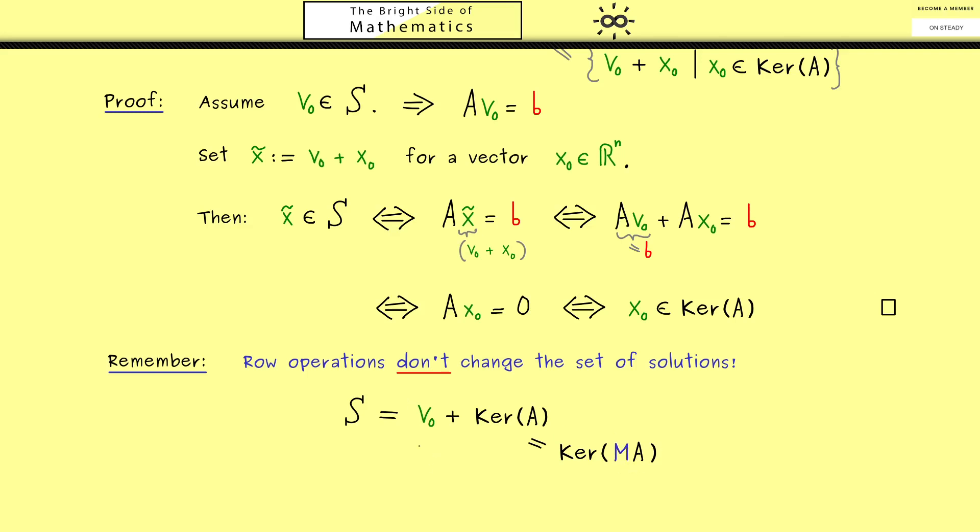On the other hand, if v_0 solves the system with A, it also solves the system with MA. More precisely, if Av_0 = b, you can just multiply both sides with M. So in summary, we see with row operations we don't change this particular solution here, and we also don't change the kernel, which means we don't change the set of solutions at all.